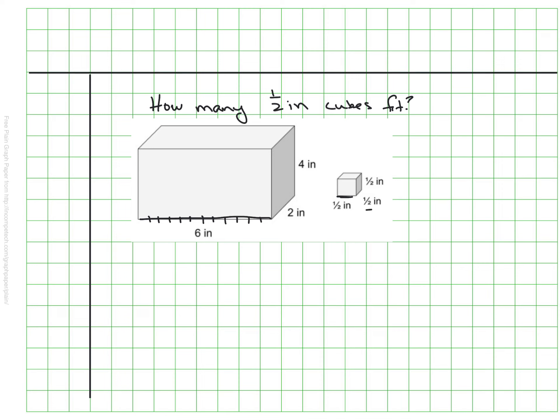And again, if I have half an inch deep, this way, and I think about how many would fit along my 2-inch depth, I'm going to be able to fit 4 in that direction. And if each one of these is half an inch high, and my box is 4 inches tall, I'll be able to fit 8 of these vertically.